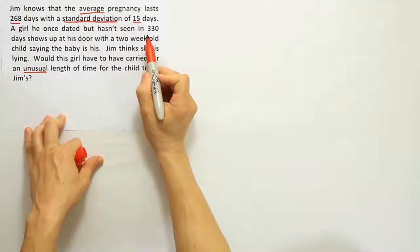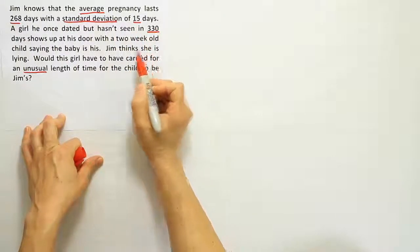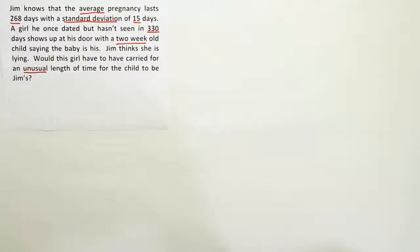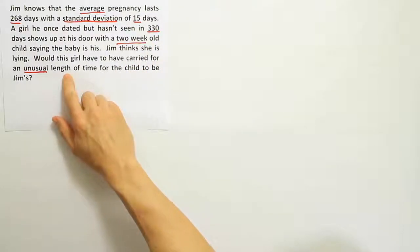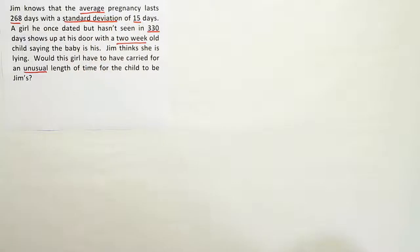It tells us that he hasn't seen the girl in 330 days, and she's with a two-week-old child. So be careful here. The first thing I want to point out is we're asking if her pregnancy length is unusual, so we need to know how long she would have been pregnant.